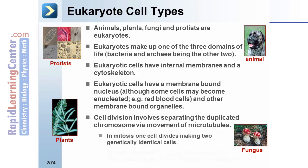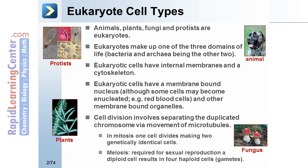Cell division involves separating the duplicated chromosomes by a movement of microtubules. In mitosis, one cell divides making two genetically identical cells. In meiosis, which is required for sexual reproduction, a diploid cell results in four haploid cells. These haploid cells are called gametes.